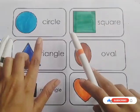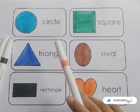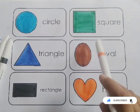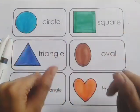Today we learned different types of shapes: circle, square, triangle, oval, rectangle, heart. Bye bye kids. Please like and subscribe.